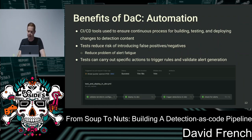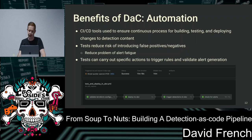By borrowing DevOps-style software development practices and using CI/CD tools, we can take advantage of automation in the building, testing, and deployment of our content. An obvious benefit is the time saved when testing. Having a set of tests that trigger your rules and validate alerts were generated gives you confidence that things are working and you're detecting the intended behaviors.